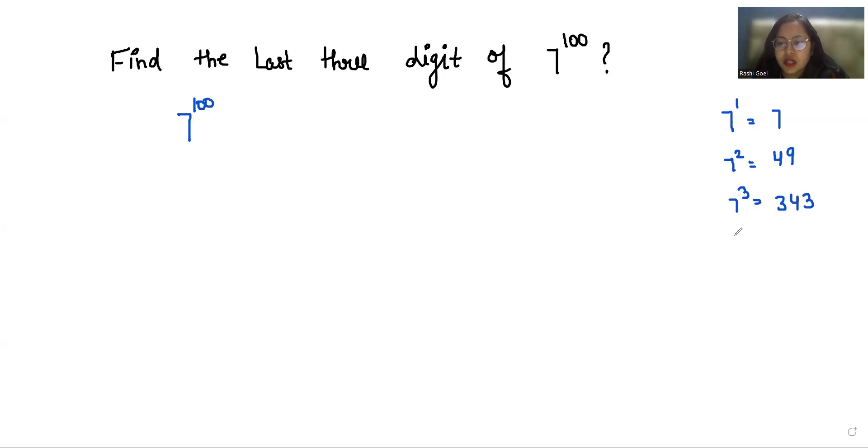7 power 4 is 2401, and 7 power 5 is 16807. Here unit digits repeat—that is 7—so we'll end up with 7 power 4 only.